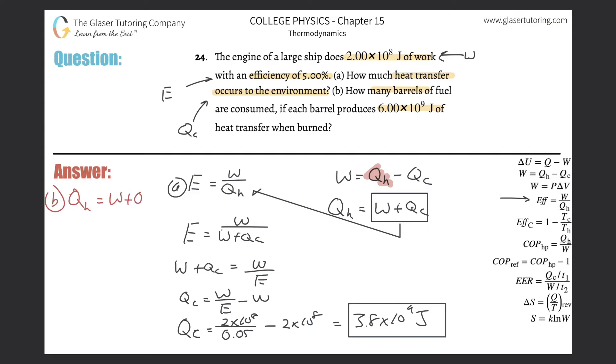Q_h equals the work plus Q_c. We'll take the work which was given, 2×10^8, and add 3.8×10^9. We get 4×10^9 joules. That's the total amount of heat put into the engine.